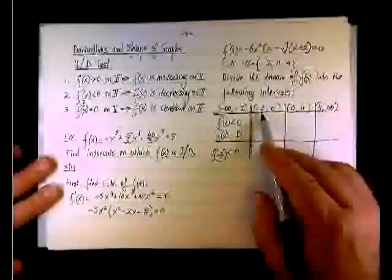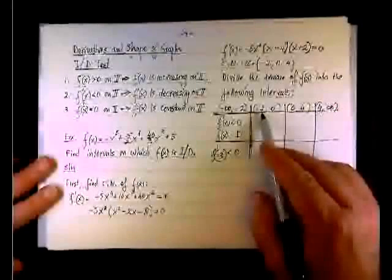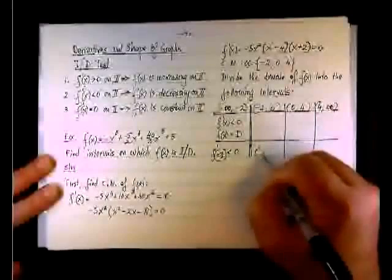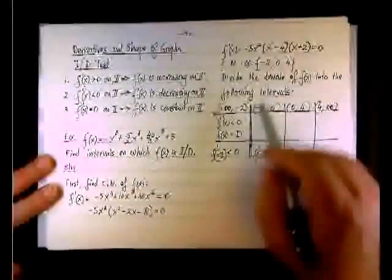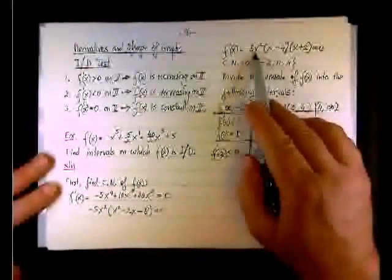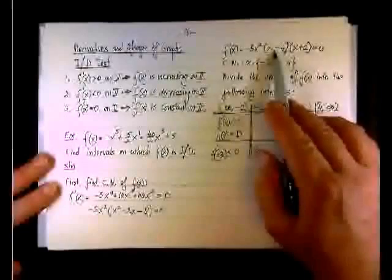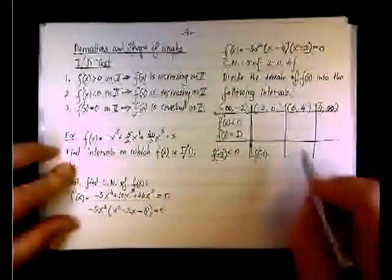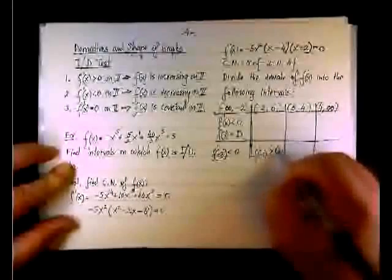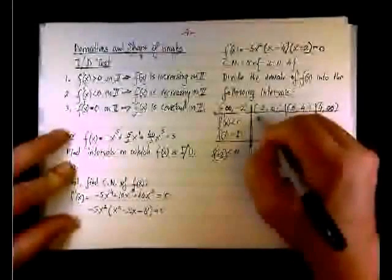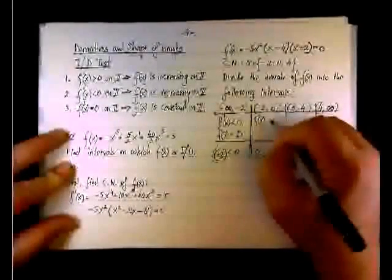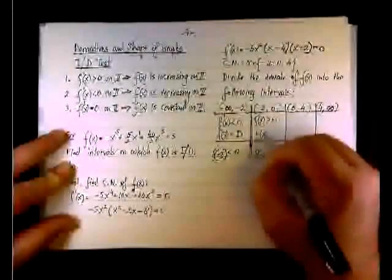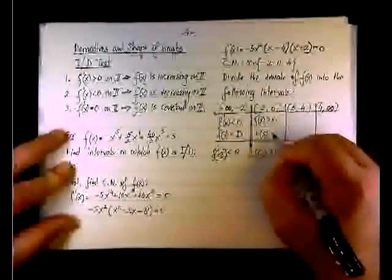For the interval negative 2 to 0, I pick the test point x equals negative 1. Plugging into the factored form: negative, negative, and positive. Negative times negative times positive gives positive. So f prime is positive on this interval, and by the ID test, f of x is increasing.